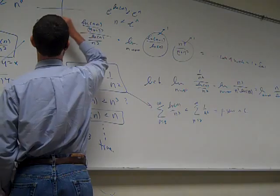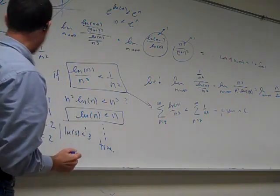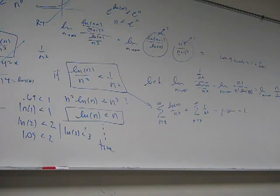Is n less than e to the n? Yes, because here's y equals x, and here's e to the x. But that's the same argument I gave here, which is just a picture. Yes, it's true. Is it easy to prove? No. Just goes to show that even simple algebraic statements aren't always easy to prove.